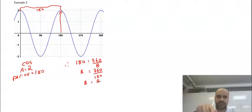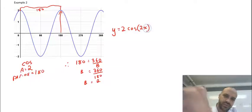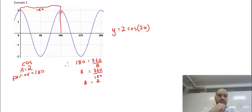Putting all of this together now, we know that y is equal to amplitude 2. The curve is a cosine curve. And we know that the b value is 2. y equals 2 cos 2x.